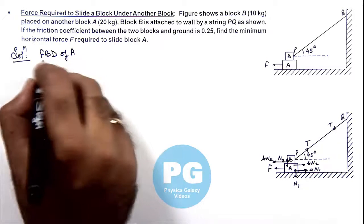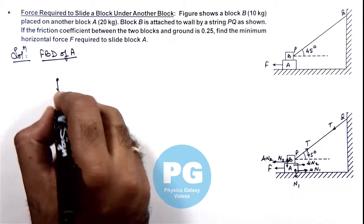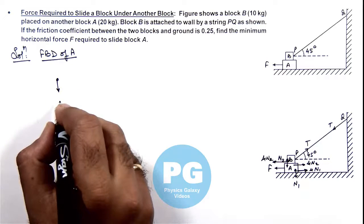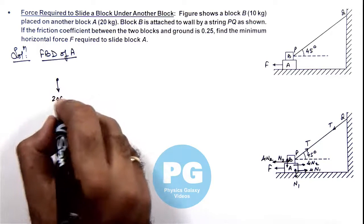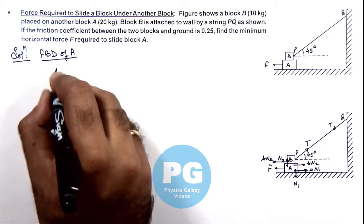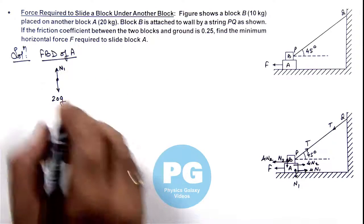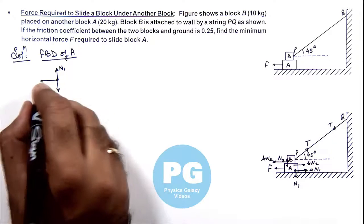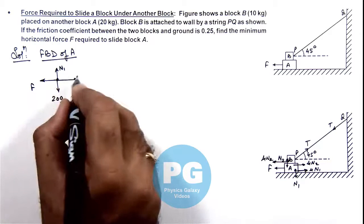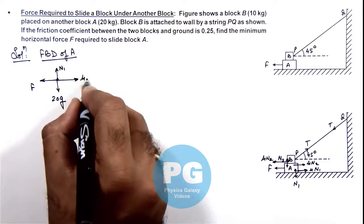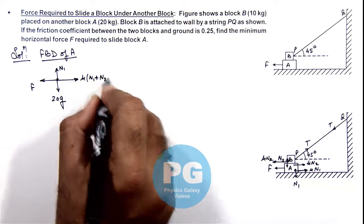For the free body diagram of block A: since A has a mass of 20 kg, it experiences a weight of 20g downward, and a normal reaction N1 upward. Toward the right it experiences the external force F, and toward the left the two friction forces mu*(N1 + N2) act on it.